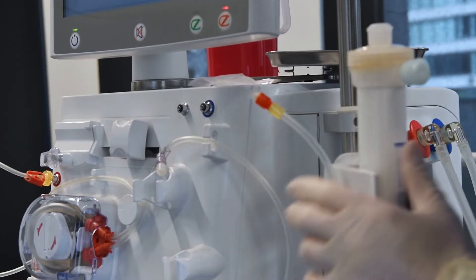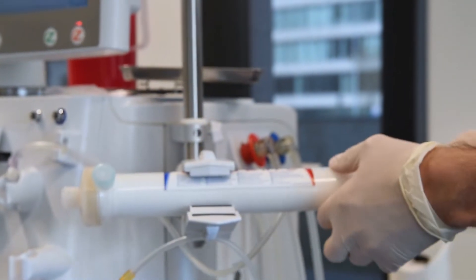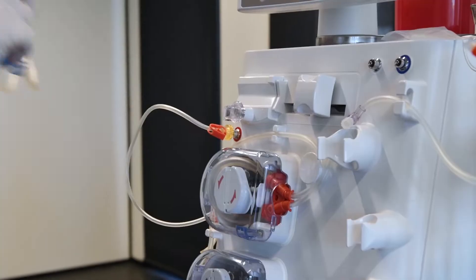Use the line holder for the bloodline leading to the dialyzer and attach the red connector to the dialyzer. Place the arterial line in one of the line holders for now.